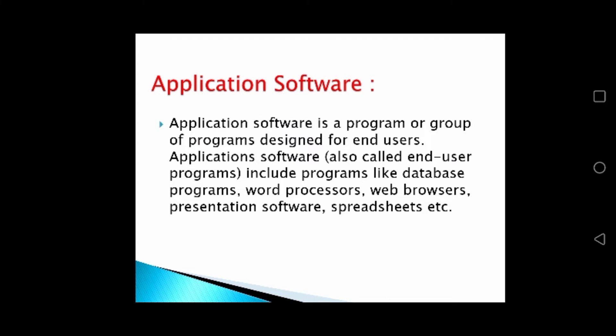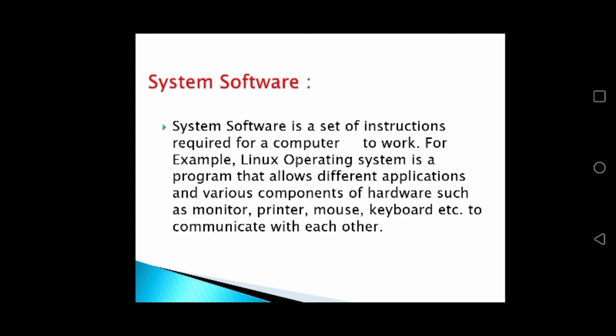Application software is user friendly, with which we can complete different tasks on a computer. System software is a set of instructions required for a computer to work. For example, a Linux operating system is a program that allows different applications and various components of hardware such as monitor, printer, mouse, keyboard, etc., to communicate with each other. System software gives instructions for applications to work in the computer system.